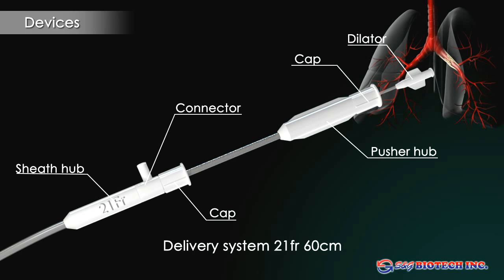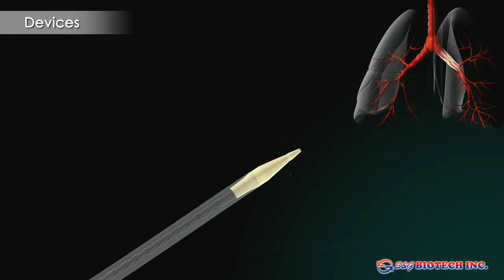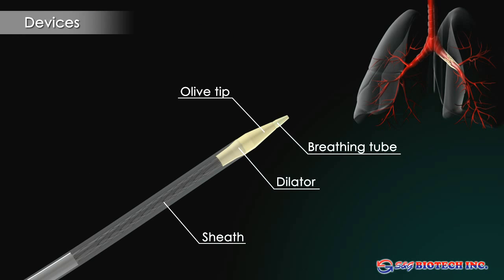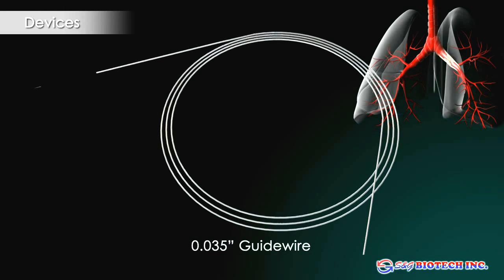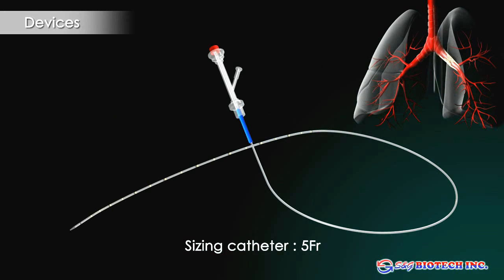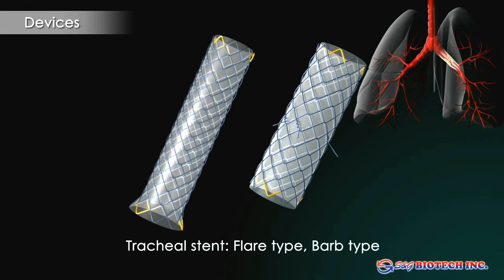The patient's airway is protected during the procedure by a breathing tube on the delivery system. Equipment required includes a 0.035 inch guide wire, a sizing catheter 5 French, and a tracheal stent.